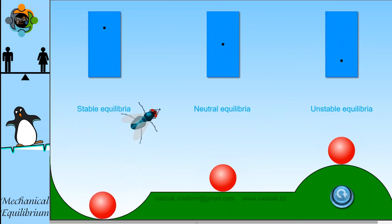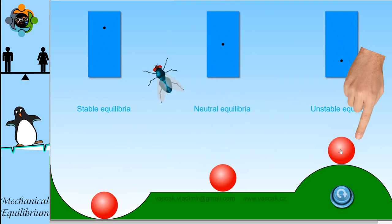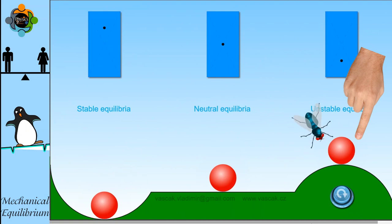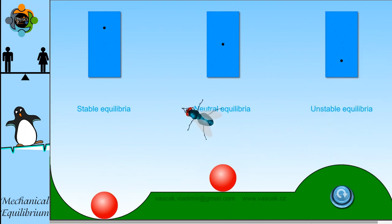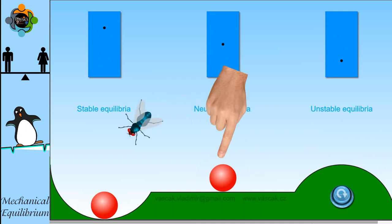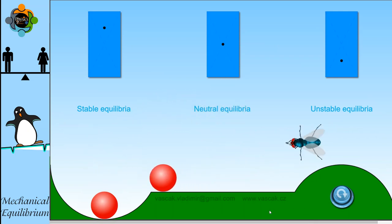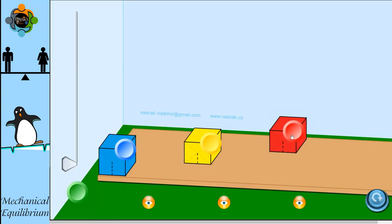On the other hand, if the ball is perched on the top of a convex surface, it's in unstable equilibrium — any slight disturbance will cause the ball to roll off. Lastly, neutral equilibrium is like balancing a ball on a flat plane surface; it neither returns to its original position nor falls off.